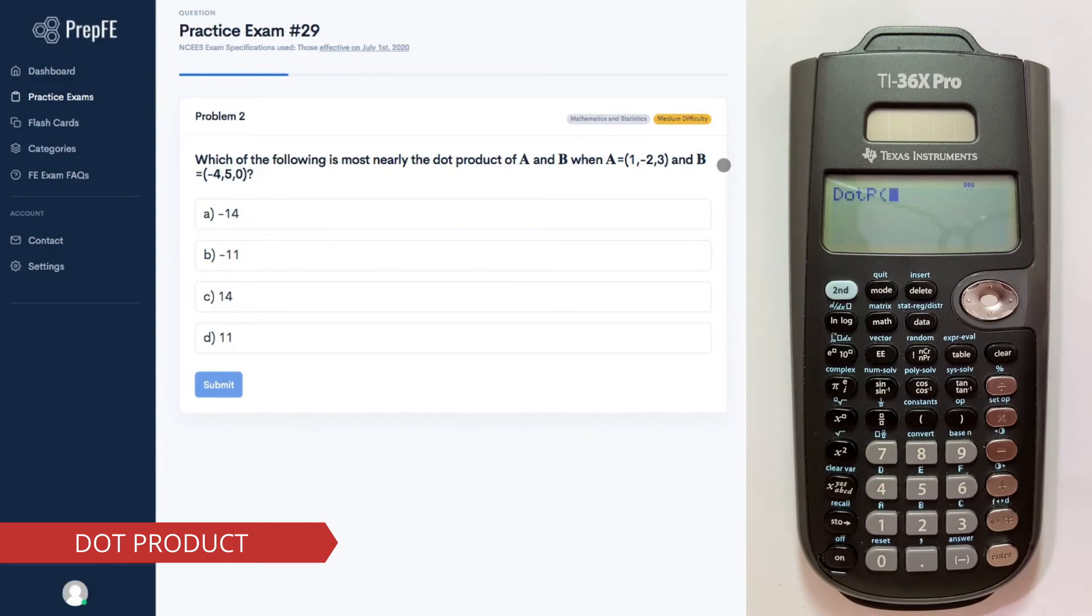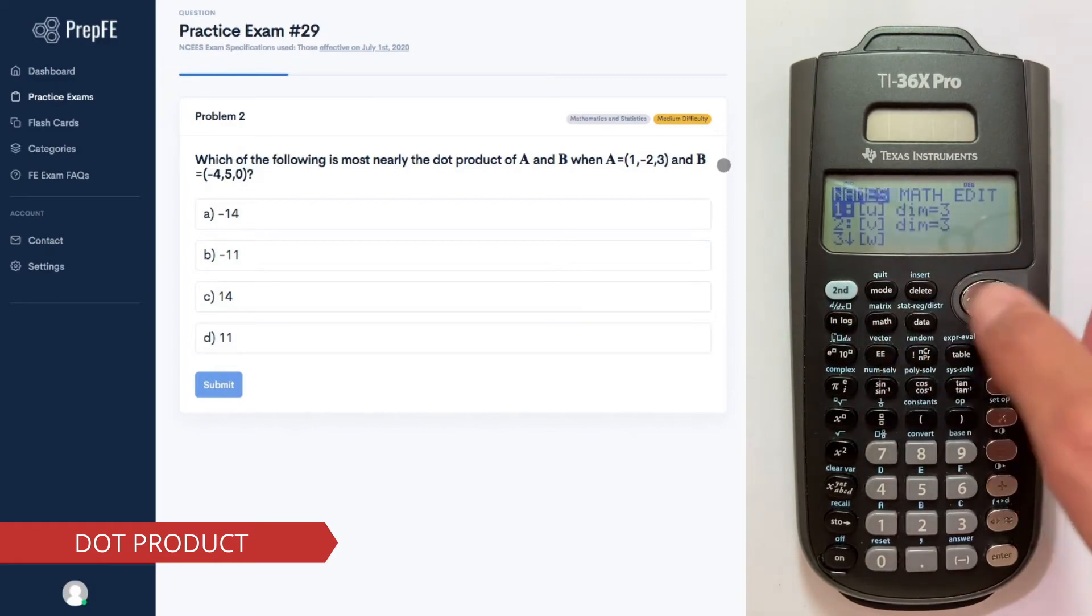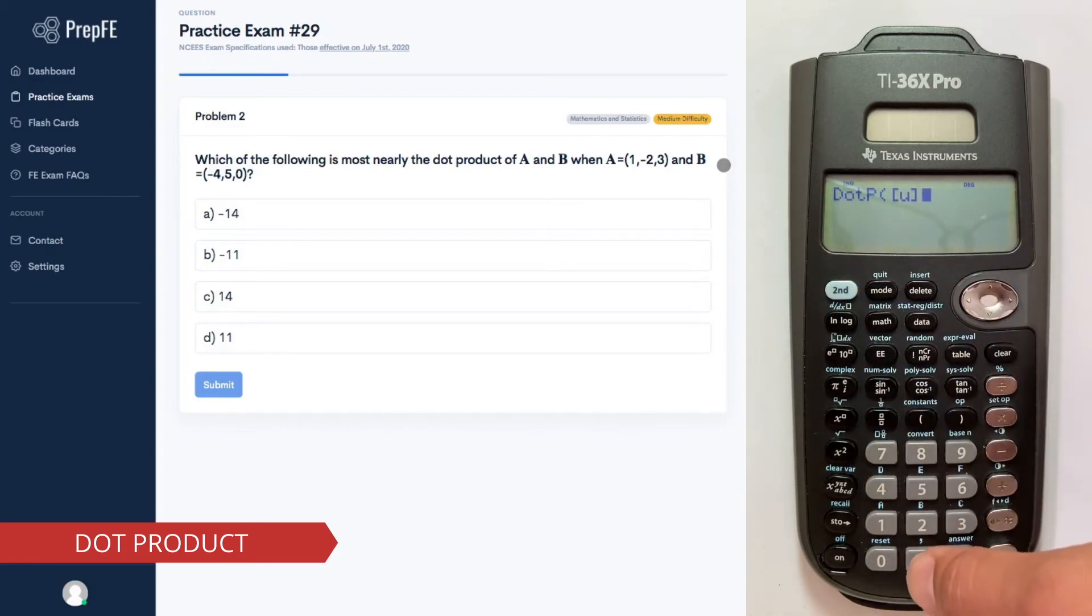Now call back the vectors that we created in the past. Go to Second, Vector, select the first one. Type in a comma by going to Second, Comma.